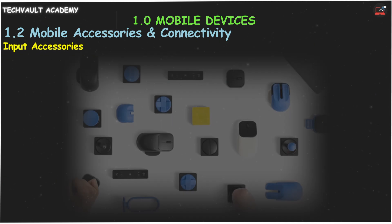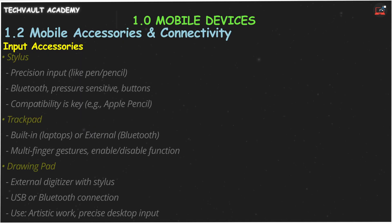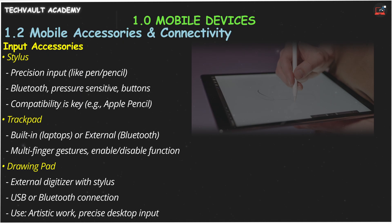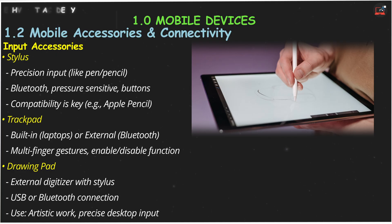Let's look at accessories that boost your mobile device's capabilities. For input accessories, while fingers work, a stylus offers precision. Think of it as a smart pen for your tablet or phone, often connecting via Bluetooth, offering pressure sensitivity, and sometimes buttons. Remember, compatibility is key — like an Apple Pencil for an iPad, for example.